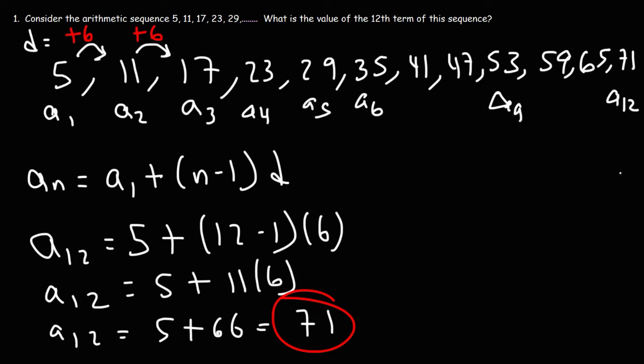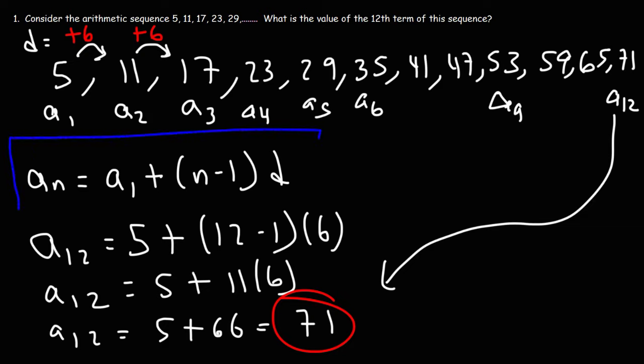And so we could see that we do have the right answer. So that's how you could find the nth term of an arithmetic sequence — it's by using this formula. All you need to know is the first term and the common difference, and then you could find any term in that sequence.